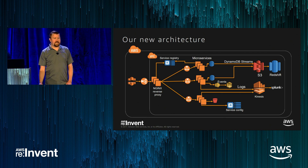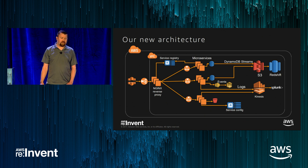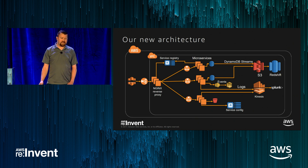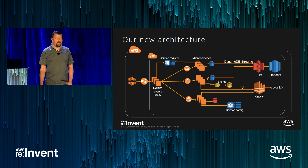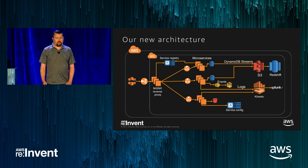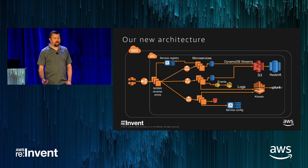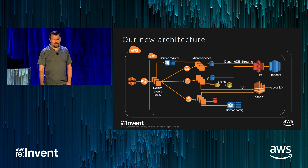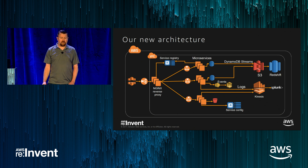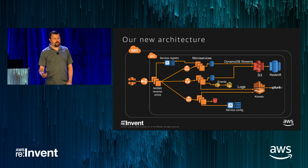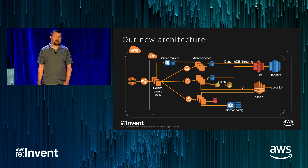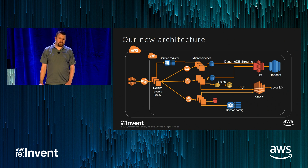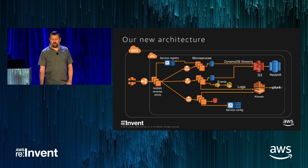One of the first things we did was sketch a blueprint architecture for what we were trying to build. This is a simplified version, but this was our goal and idea of the different AWS services we wanted to use. We started this two years ago, which was a little before API Gateway was a thing, so we're still using an NGINX reverse proxy. Our goal was to use as many AWS services as possible — we didn't want to build things that Amazon could provide. We wanted to focus on business logic and customer features rather than maintaining other services. So everywhere there was an Amazon service — Dynamo, SNS, SQS, S3, Redshift — we utilized it.